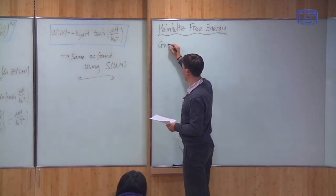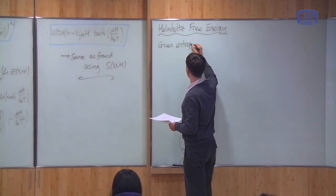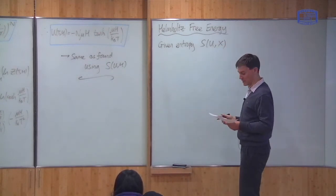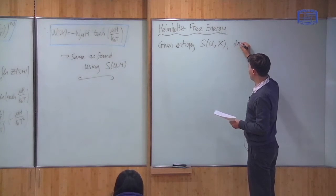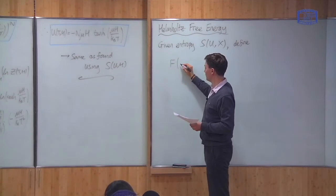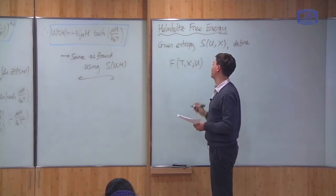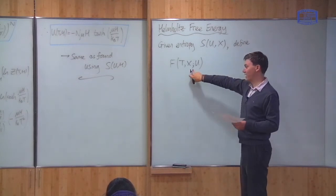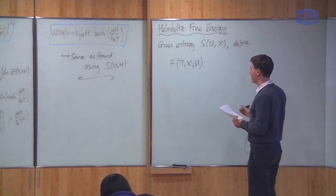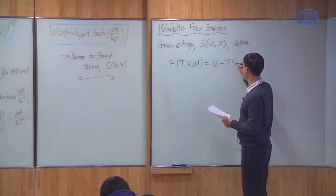Let me define it straight away. Given some entropy function S, which depends upon the energy U and some other system properties X, we define a new function which we call F, which depends upon T and X, and also the energy U. I define this as being equal to U minus T times the entropy: F(T, X; U) = U - TS.